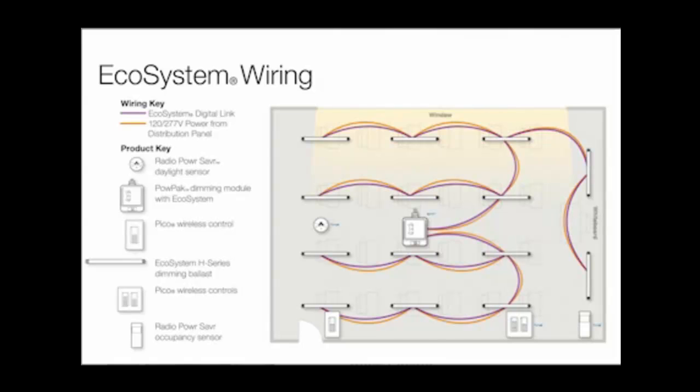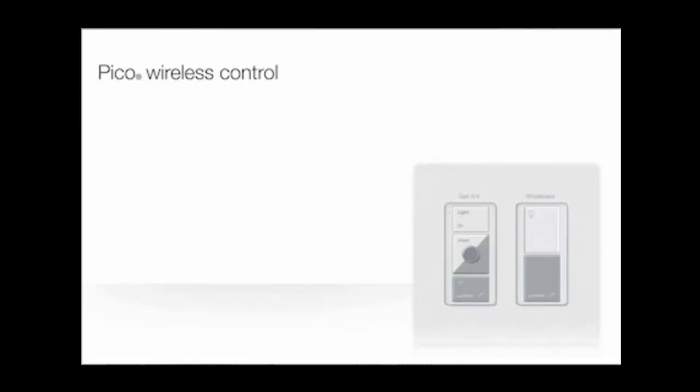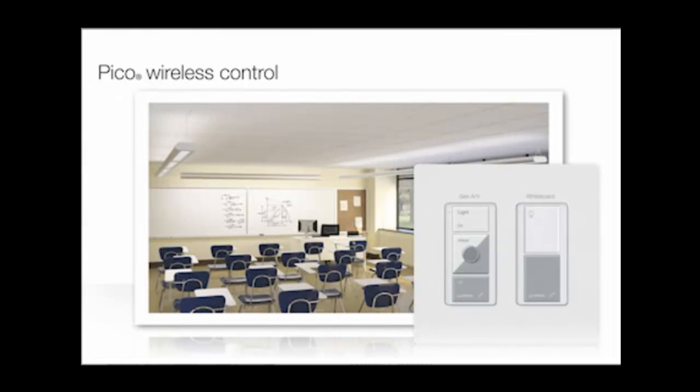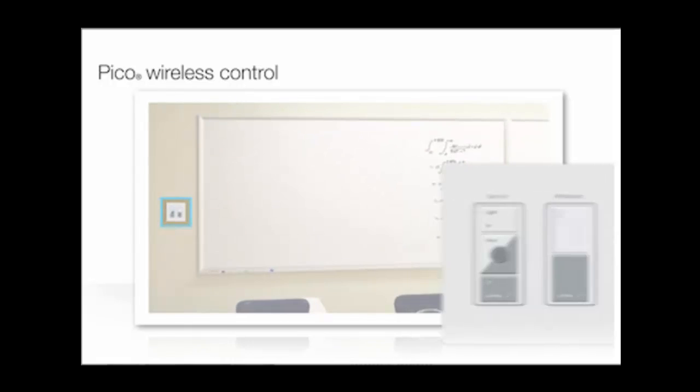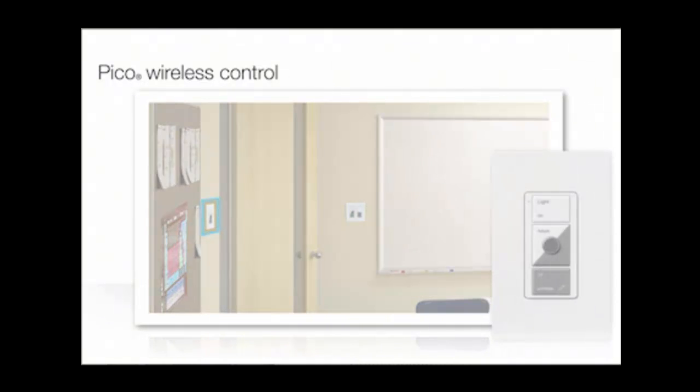Pico wireless controls mount in standard Claro faceplates using an adapter. In a typical classroom, it is ideal to place two Pico controls in a dual-gang wall plate next to the whiteboard for convenient instructor access, and another Pico next to the entrance for someone entering the space.